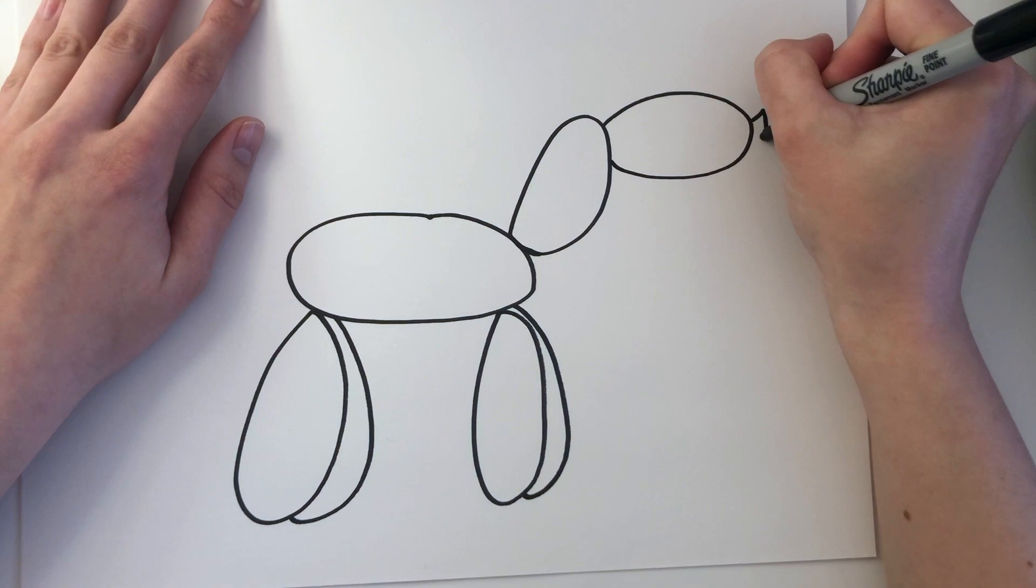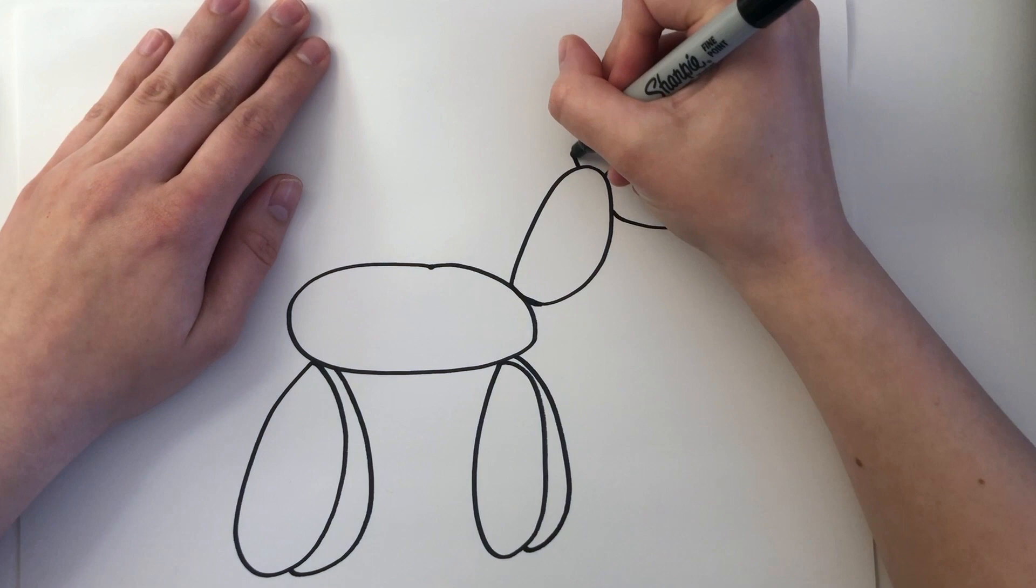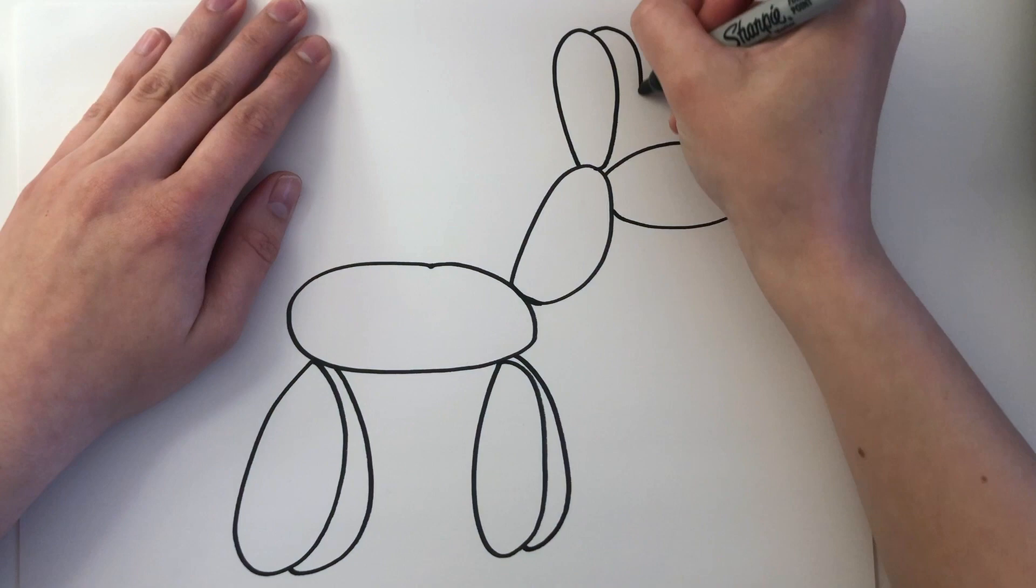I'm going to create two tall ears on my dog. Just like the legs, create another curve next to that first ear, and there we go.